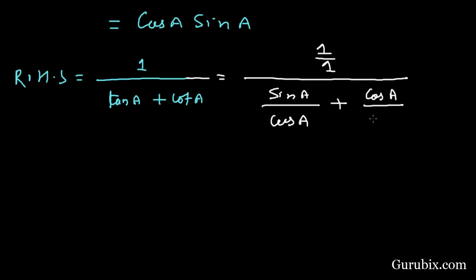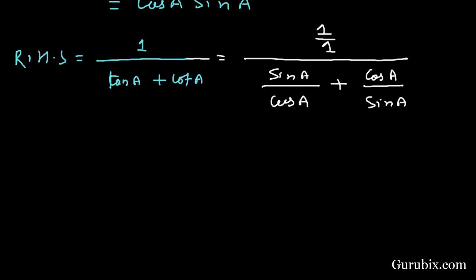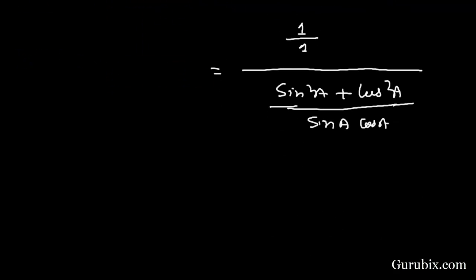If we further solve this value, this equals 1 over, and if we take LCM, then this becomes sin A cos A, and this equals sin squared A plus cos squared A. Finally, this value becomes sin A times cos A over sin squared A plus cos squared A.